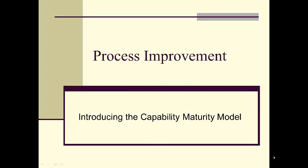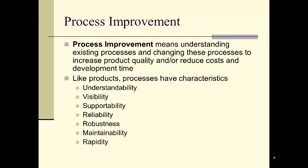Computer Science 461, Process Improvement. Today we'll get around to introducing the Capability Maturity Model, but we'll talk about the area of process improvement in general before doing that. What is process improvement? Basically it means understanding existing processes and changing these to increase product quality and/or reduce costs and development time.